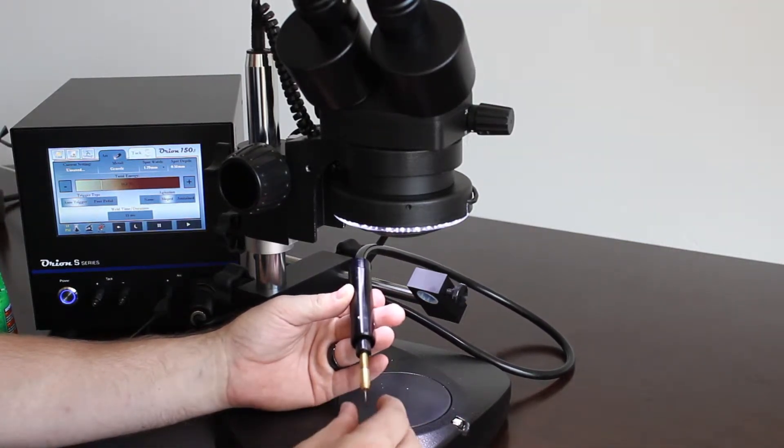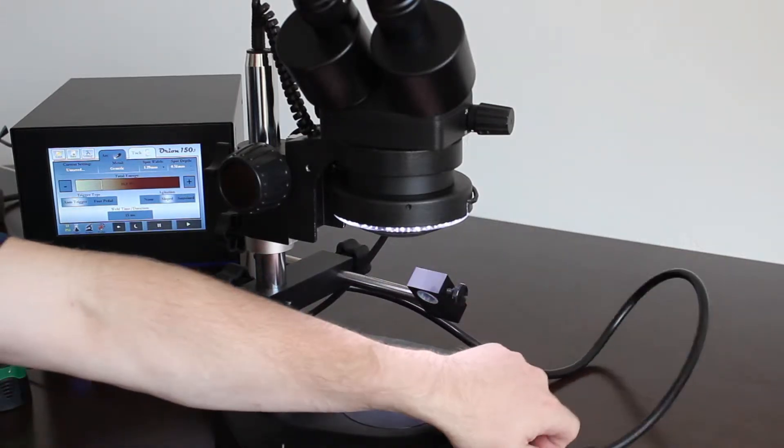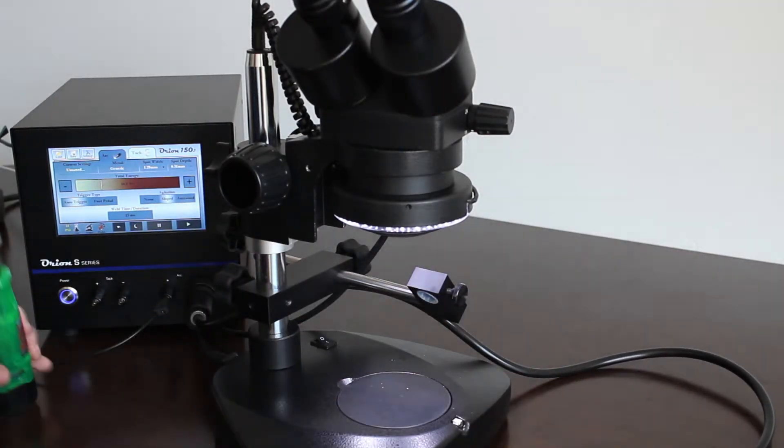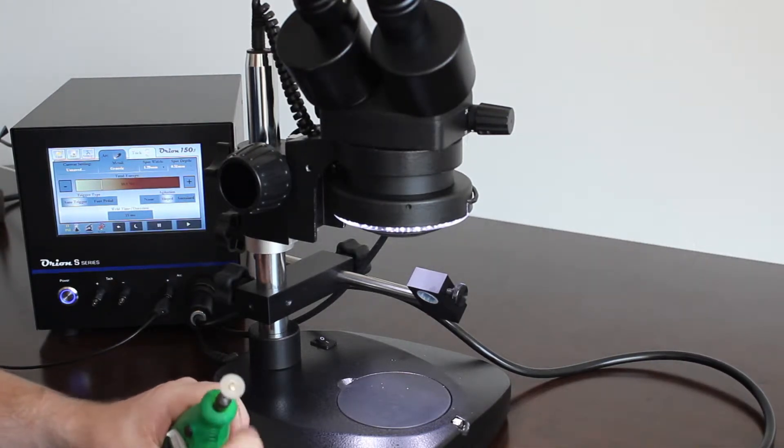Loosen our brass collet, pull the electrode out, set that to the side. We will take our Dremel disc and we sharpen it.